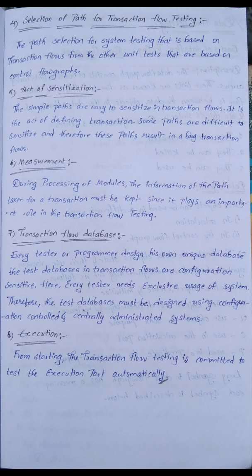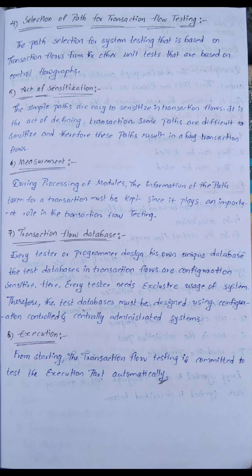Transaction flows are configuration-sensitive, and every tester needs exclusive usage of the system. Therefore, test databases must be designed using configuration-controlled and centrally administered systems. Transaction flow testing is committed to the test execution part automatically — once a transaction starts, it must execute automatically until completion.